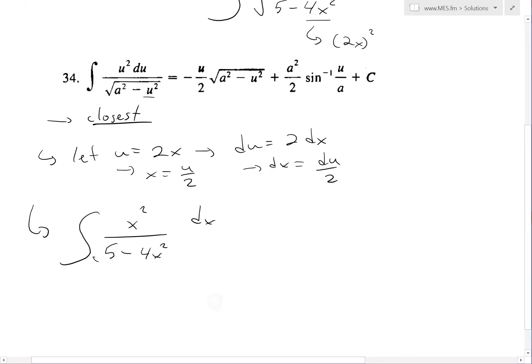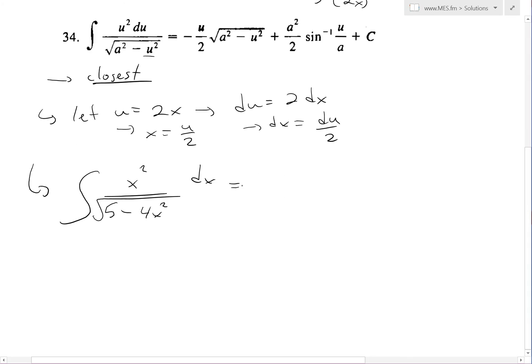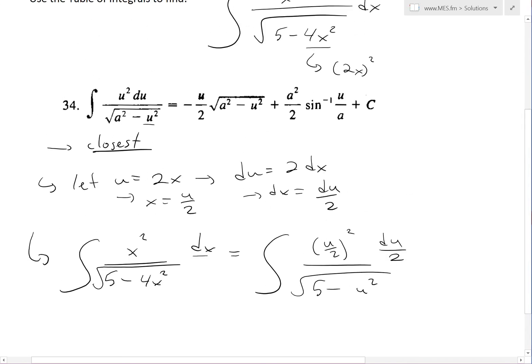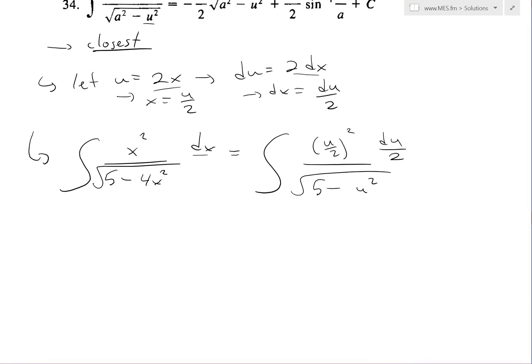So if we plug this inside, this becomes the integral of x squared over square root 5 minus 4x squared dx. I'll write this better. So now we're replacing everything. There's an x, this becomes x squared, so that is u over 2 squared. That's just dx. And then we have square root 5 minus u squared.